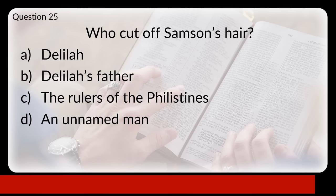Question twenty-nine: according to Matthew's Gospel, who did Jesus say in the Beatitudes will see God? Is that the poor in spirit, the meek, the pure in heart, or the peacemakers? The answer is C, the pure in heart.